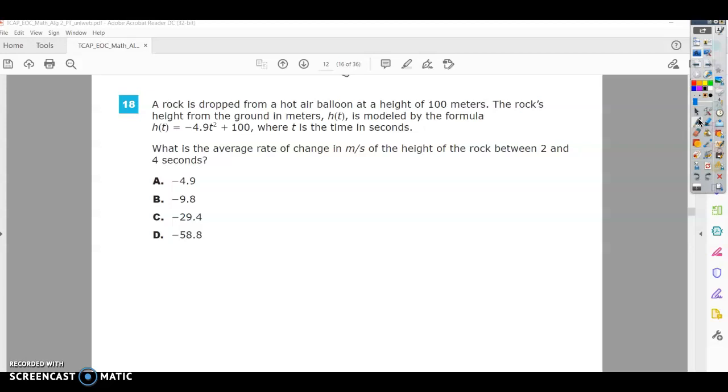The rock's height from the ground in meters, h of t, is modeled by the formula h of t equals negative 4.9t squared plus 100, where t is the time in seconds. What is the average rate of change in meters per second of the height of the rock between 2 and 4 seconds?